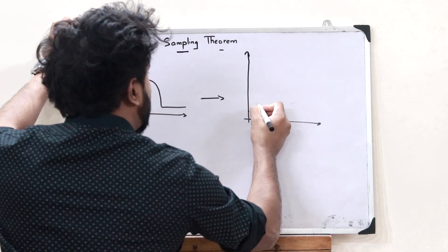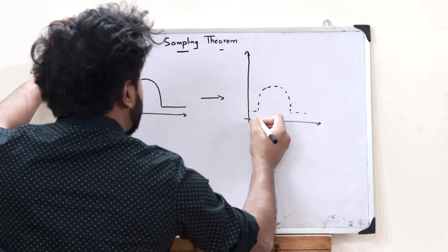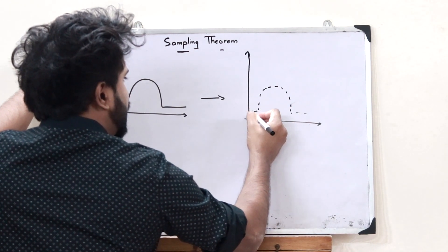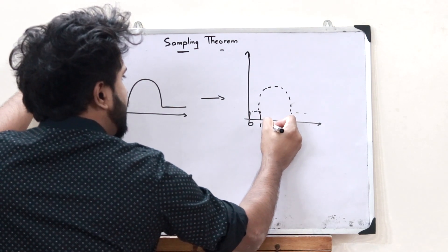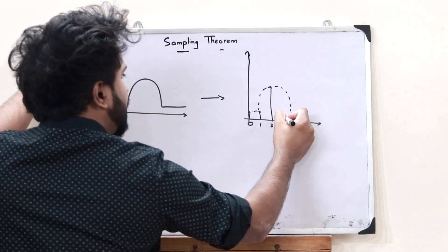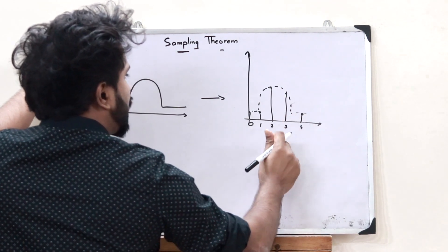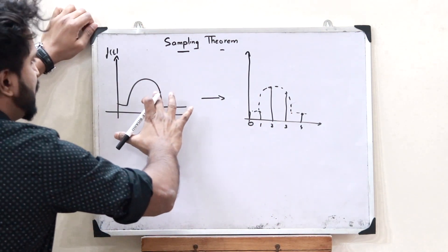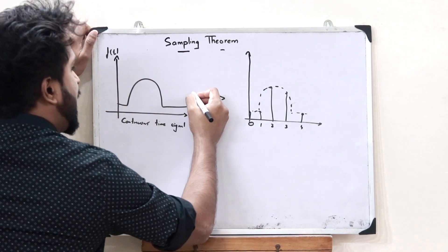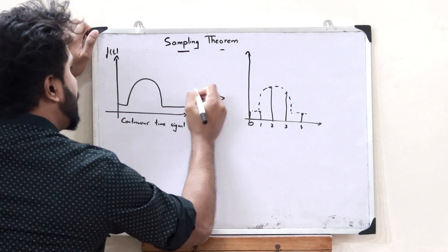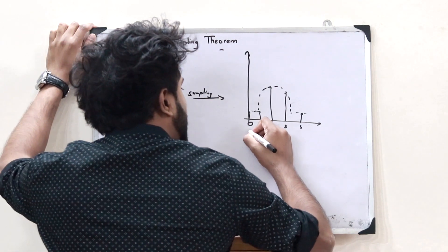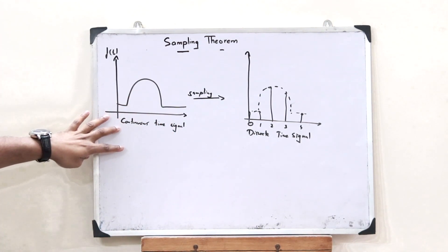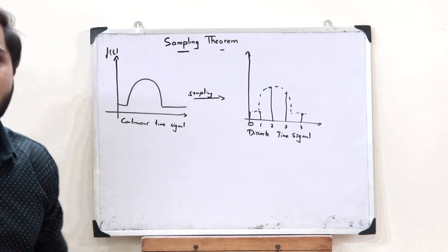When we sample this particular signal, we will get a discrete signal. At time t equals 0, we have this. At time t equals 1, we would have this. At time t equals 2, we would have this. At time t equals 3, we would have this. At time t equals 4, we would have this. So at discrete time intervals, we have obtained a discrete signal. This particular continuous time signal has been converted with the help of sampling onto a discrete time signal.